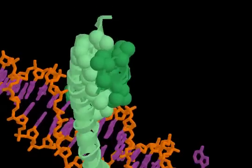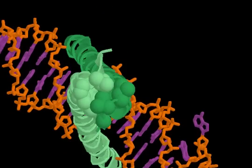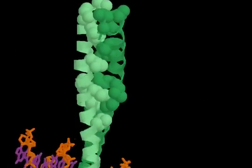A space-filling view reveals the tight packing of side chains between the leucine zipper helices. This makes the domain especially stable.